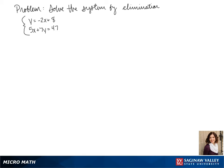Welcome to another day of algebra. Today we'll be solving the system by elimination. Our first equation is y equals negative 2x plus 8, and our second equation is 5x plus 7y equals 47.